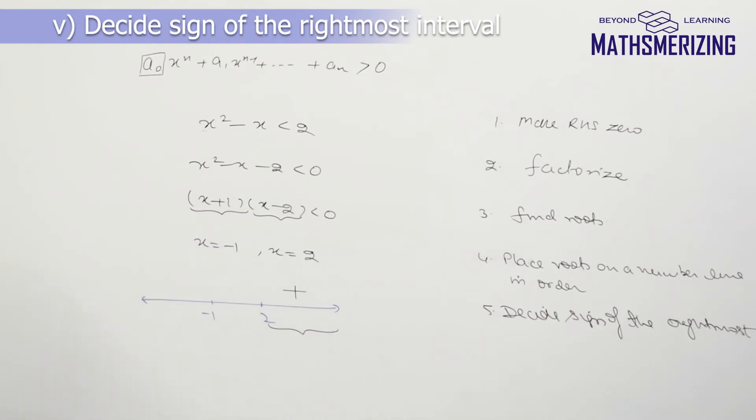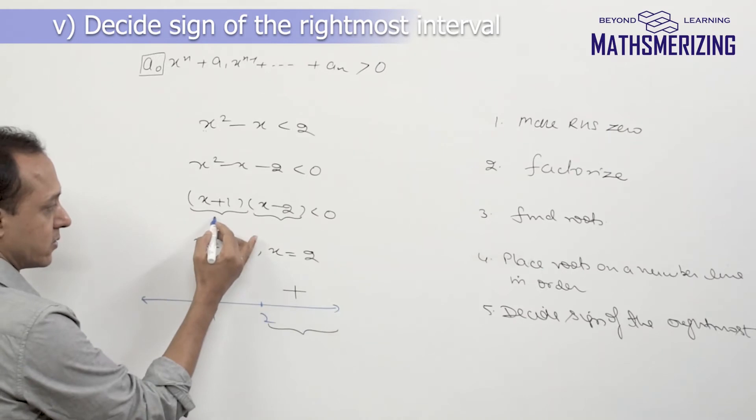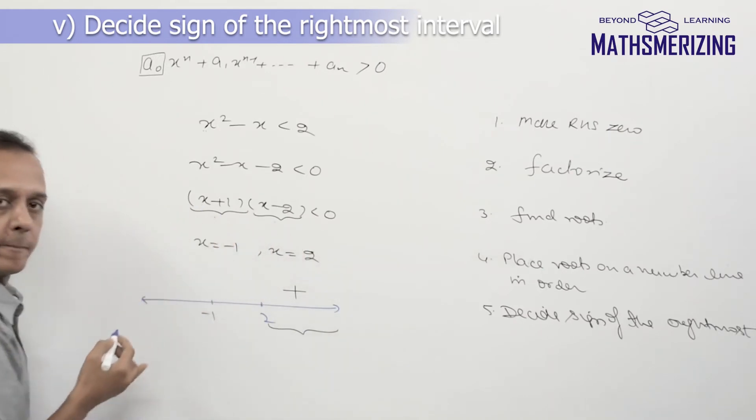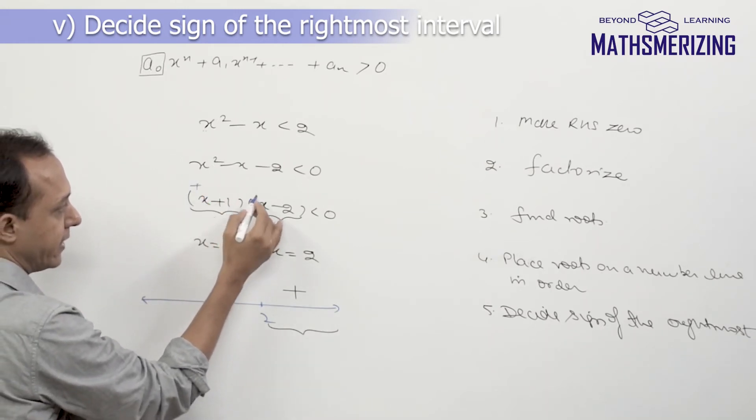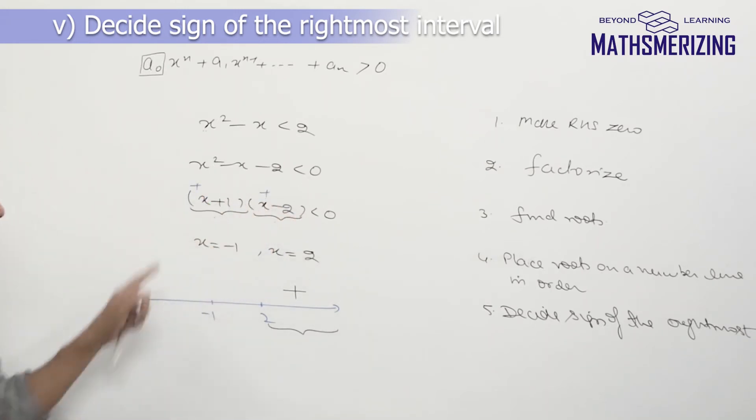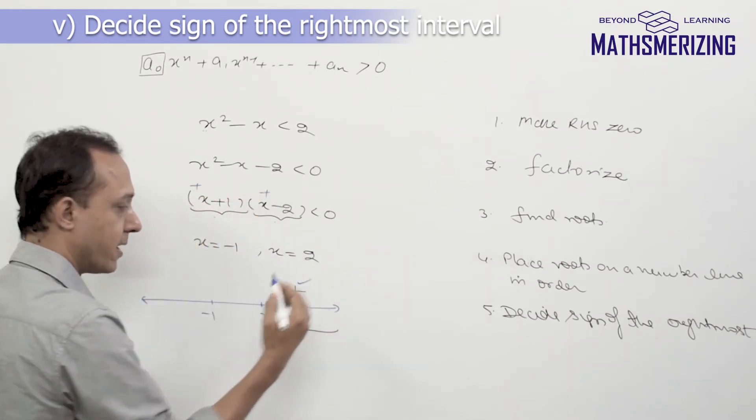Another method can be just go to your factors and for each factor look at the sign of the leading coefficient. Here the leading coefficient is positive. Here also the leading coefficient is positive. So plus times plus will be plus. So I'll put a plus sign there.